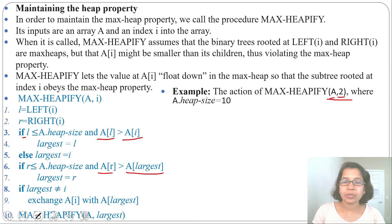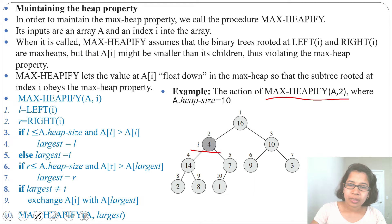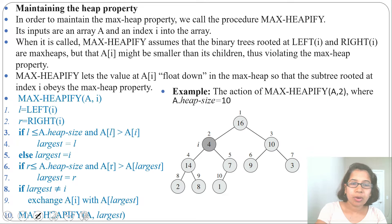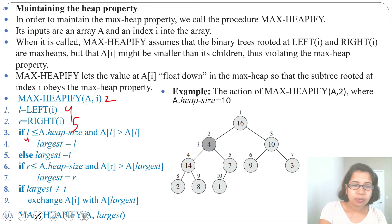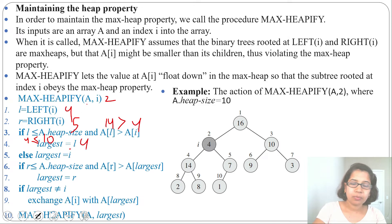Let's walk through an example: max heapify called on array A at index 2, where heap size is 10. This is the tree with indices 1 through 10. We call max heapify on A[2], so L equals left of 2 which is 4, and R equals right of 2 which is 5. Is L less than heap size? 4 is less than 10, yes. A[L] is 14, which is greater than A[2] which is 4 — yes it satisfies, so largest becomes 4.